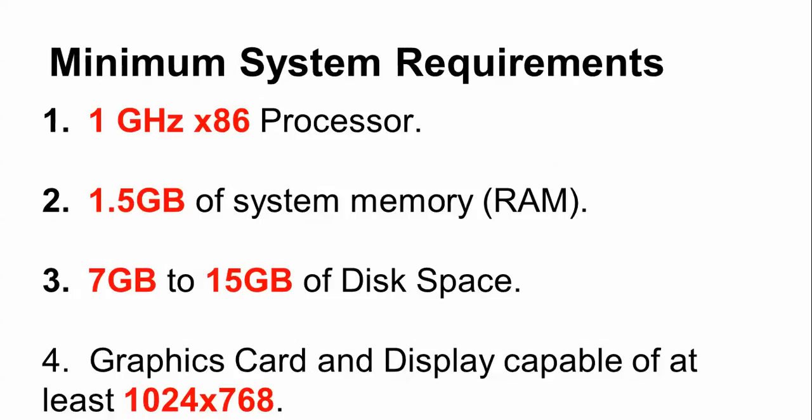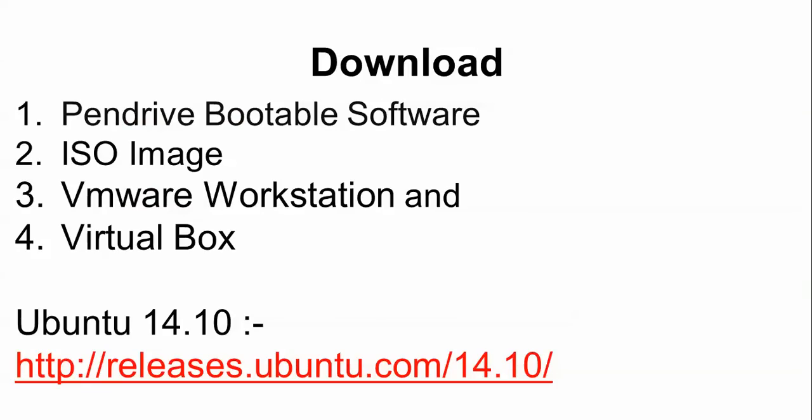The minimum requirements for Ubuntu 14.10 installation are: 1 GB processor, 1.5 GB RAM, and 7 GB to 15 GB of disk space. This is the download link where you are going to download VirtualBox.